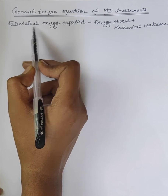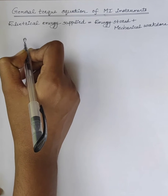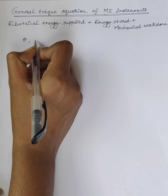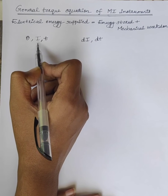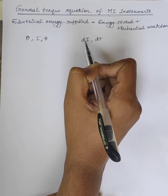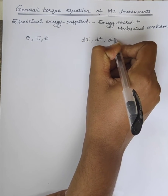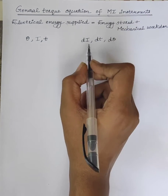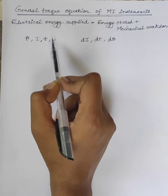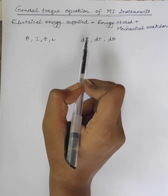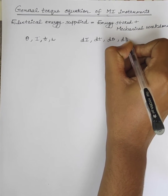First we have to find out electrical energy supplied. Let theta be the deflection of the pointer corresponding to a current of I amperes at time T seconds. Let the current be increased by dI at time dT. The corresponding deflection is d·theta. Also, there is a change in inductance value L since the position of the moving iron changes with respect to the electromagnets. Therefore, the inductance changes from L to L+dL.